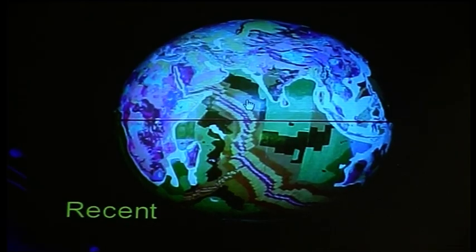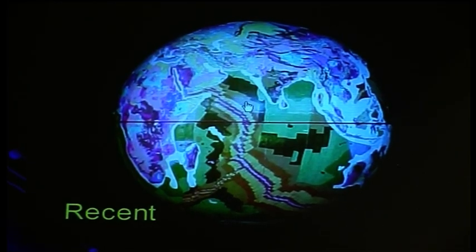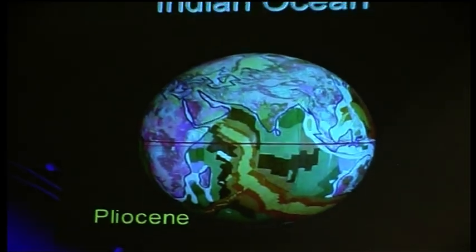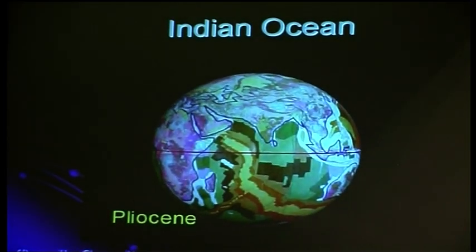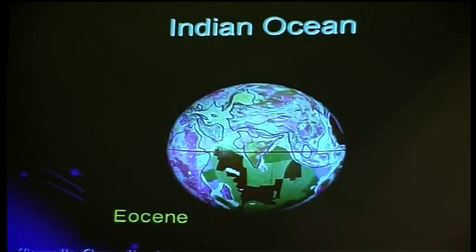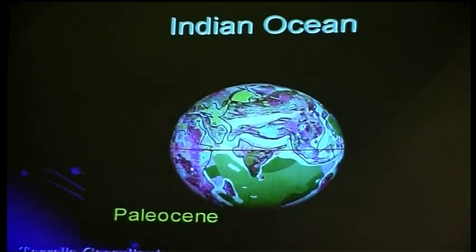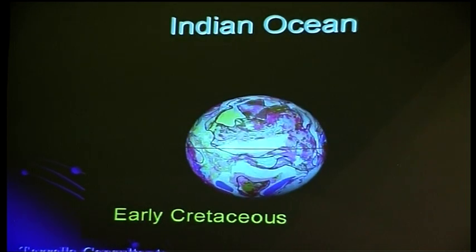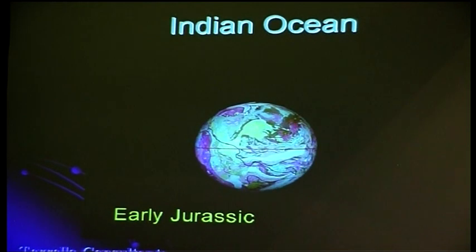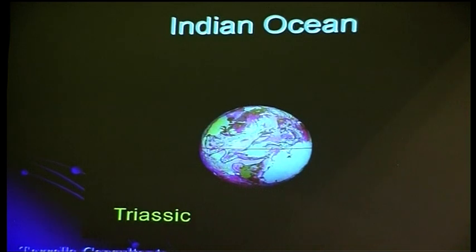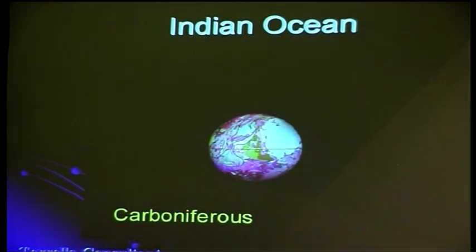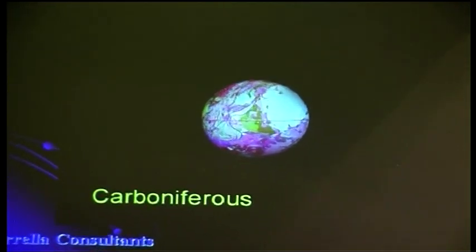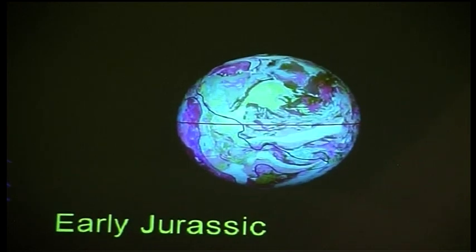Now we'll sequence through the Indian Ocean as well, just exactly the same. We'll just sequence through each of the models I constructed by simply removing each of these time stripes away in succession until we have a complete continental crust at around about 52 to 55% of the present Earth radius.